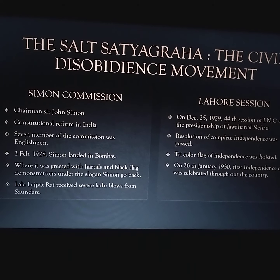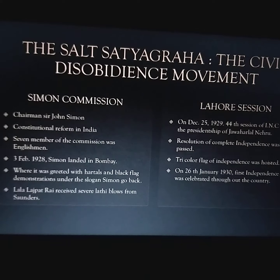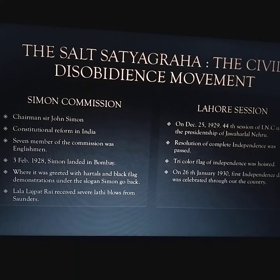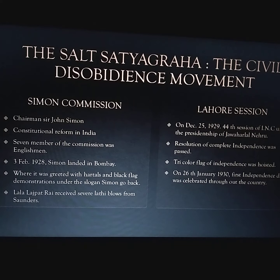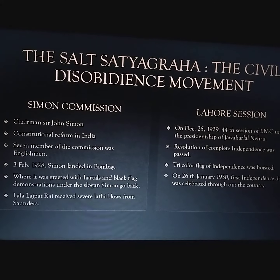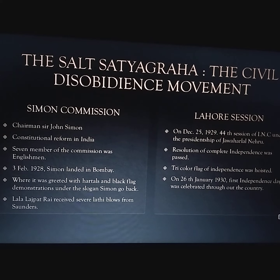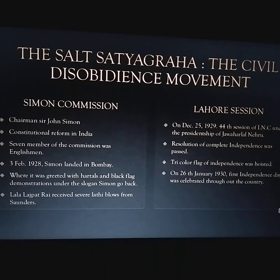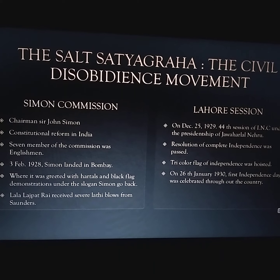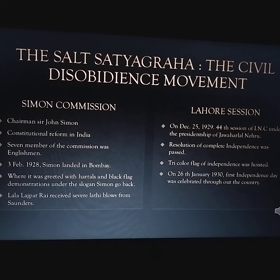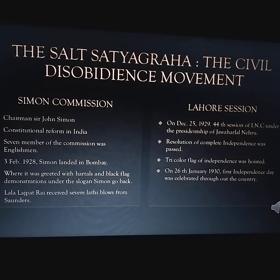Therefore, almost all the political parties decided to completely boycott it. Gandhiji himself did not participate in the anti-Simon Commission movement, but he gave it his blessing. On February 3, 1928, the Simon Commission landed in Bombay where it was greeted with hartals and Black Flag demonstrations under the slogan 'Simon Go Back.' In Lahore, Lala Lajpat Rai led an anti-Simon Commission demonstration on 30 October 1928. While leading the demonstration, he received severe lathi blows from Saunders, the British police officer, and he was injured. On 17 November 1928, the Simon Commission's report failed to satisfy the Indians.